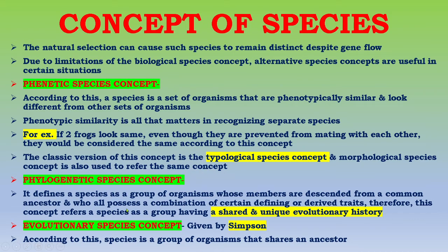The next concept is the phylogenetic species concept, which defines species as a group of organisms whose members are descended from a common ancestor and who all possess a combination of certain defining or derived traits. Therefore, this concept refers to species as a group having a shared and unique evolutionary history.